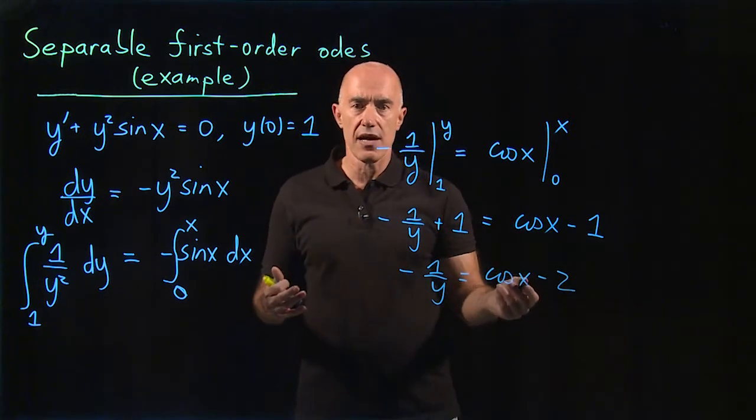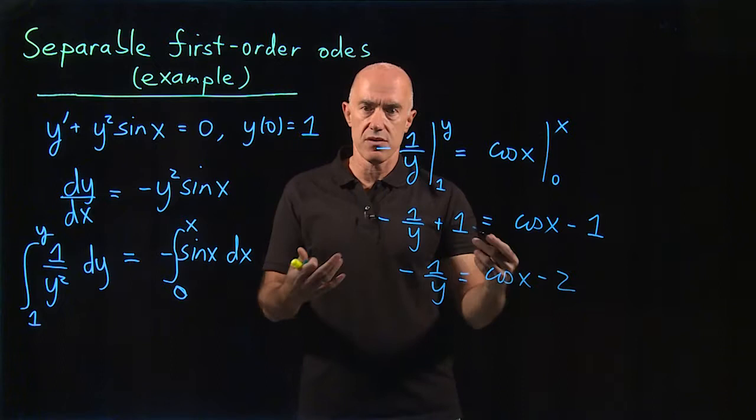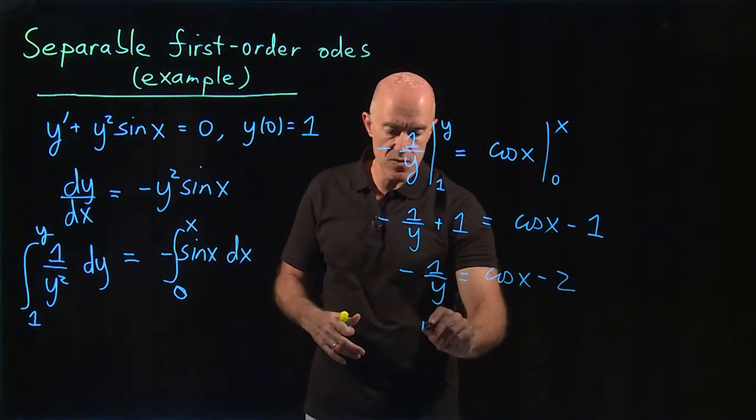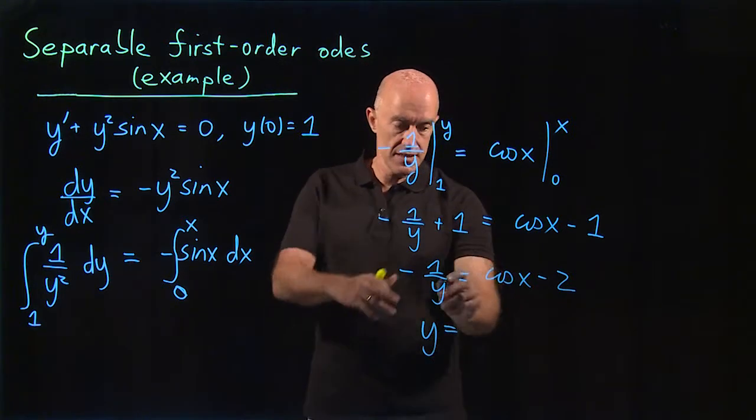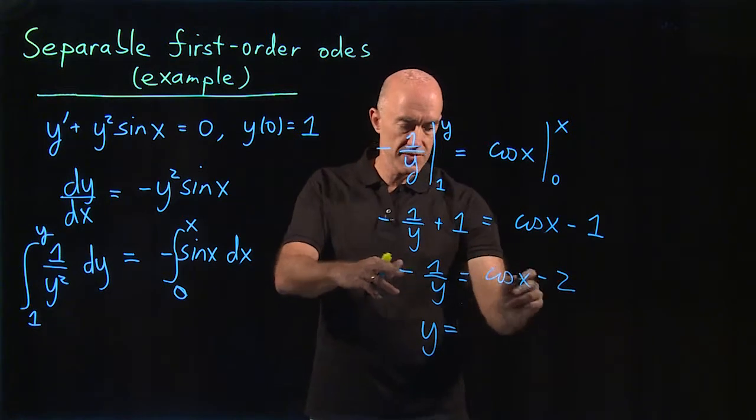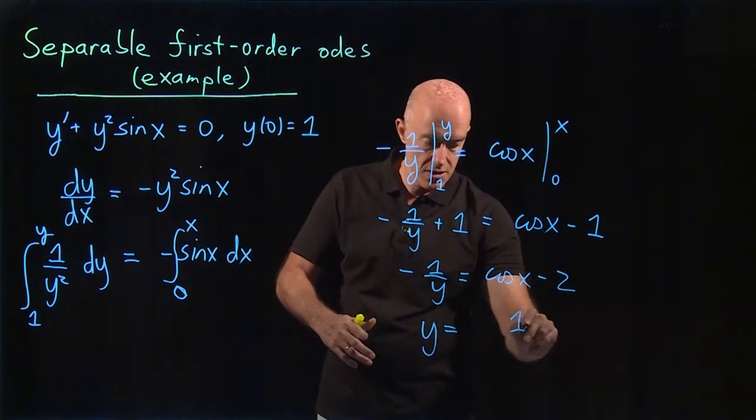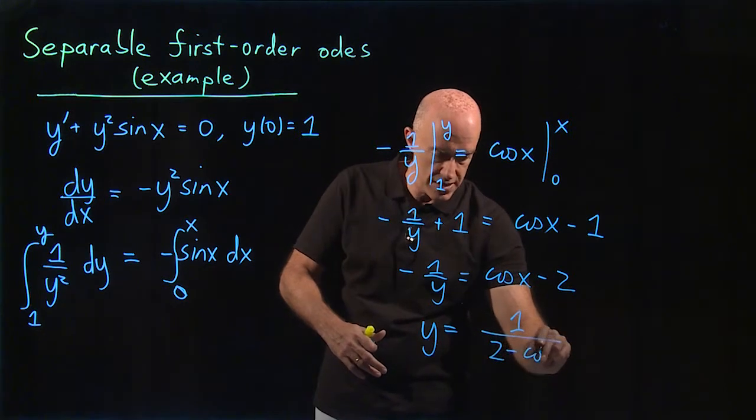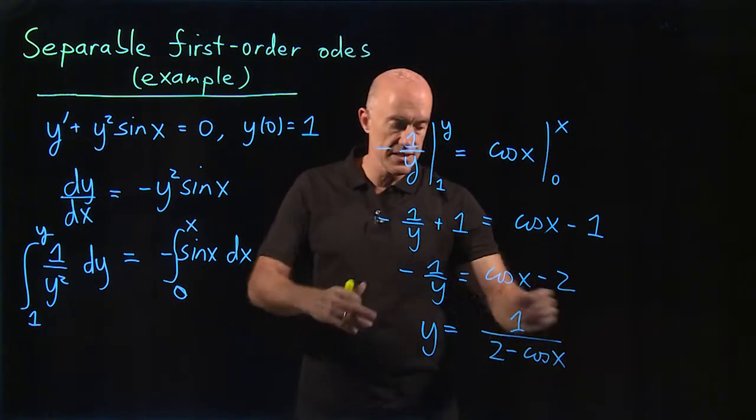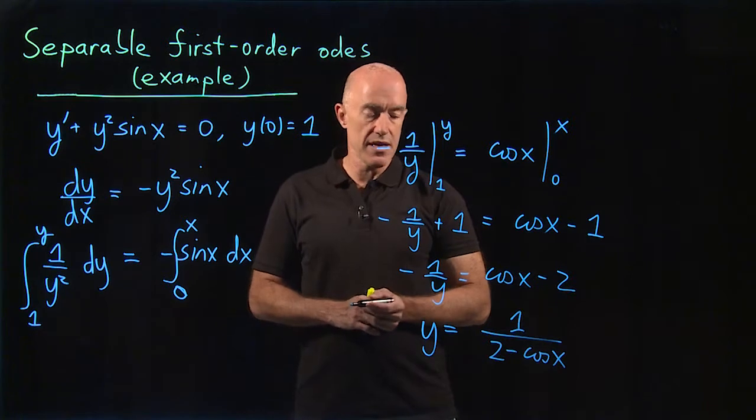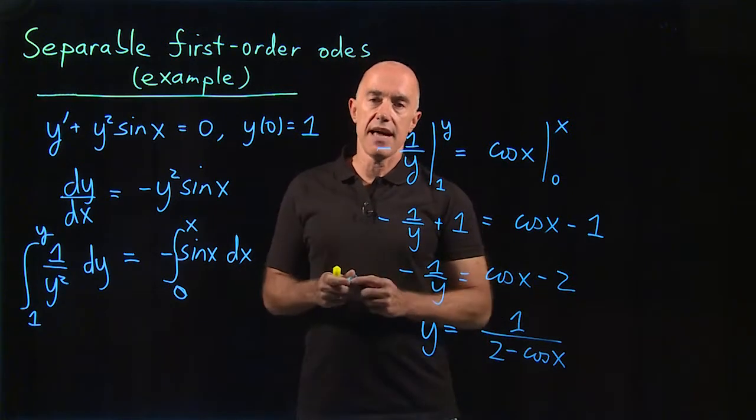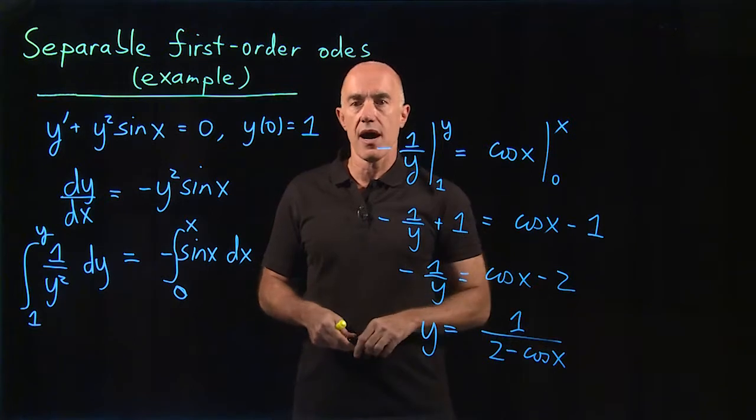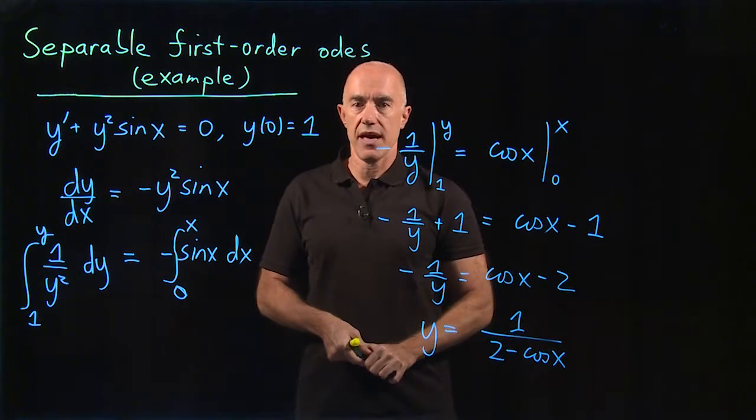We multiply through by -1 and take the reciprocal. So y equals 1/(2 - cos(x)). That's the analytical solution. We found y as a function of x.